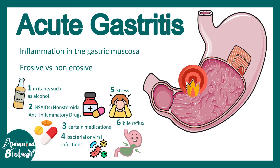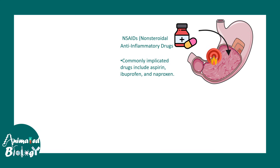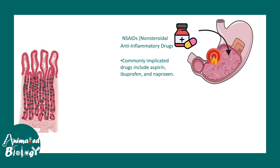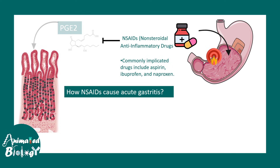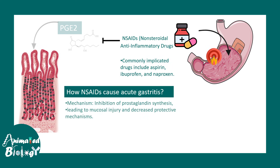One of the significant factors that can lead to acute gastritis is NSAIDs — non-steroidal anti-inflammatory drugs. Common examples include aspirin, ibuprofen, and naproxen. These drugs can harm the gastric lining by inhibiting prostaglandin E2, which normally has a protective effect on the gastric mucosa. NSAIDs can inhibit that protective mechanism.